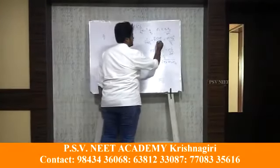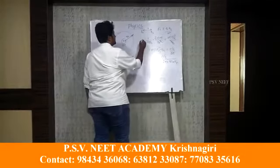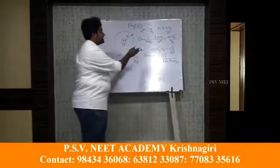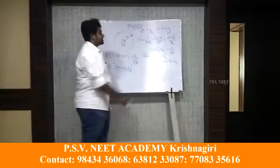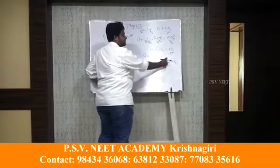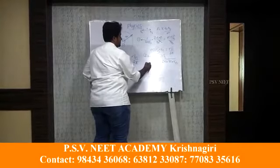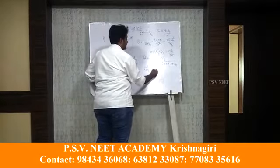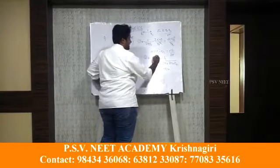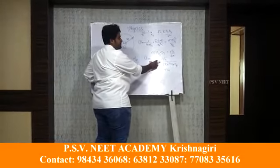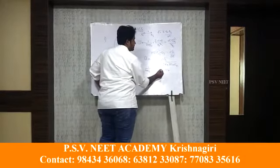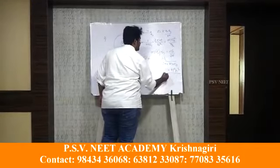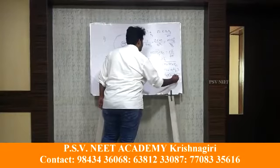In the first equation, we can cancel Rn on both sides. Now substituting the expression for Vn into the first equation, and squaring Vn, we get Vn² = n²h² / (4π²m²Rn²). Substituting this into the first equation gives (1 / 4πε₀) × Ze² / Rn = m × n²h² / (4π²m²Rn²).